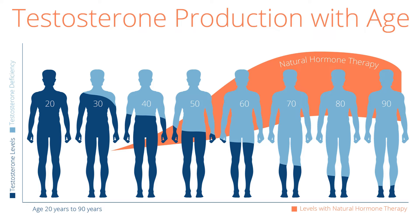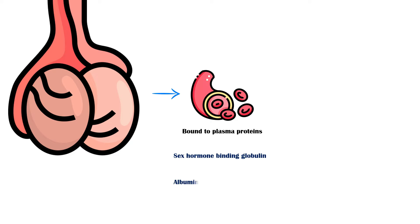After secretion from the testes, testosterone is transferred to the target organs via blood. In the bloodstream, testosterone is bound to plasma proteins, especially to the sex hormone-binding globulin and albumin.